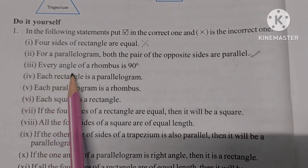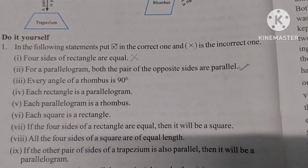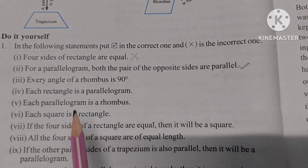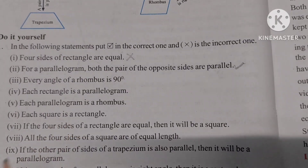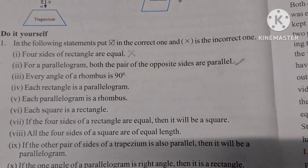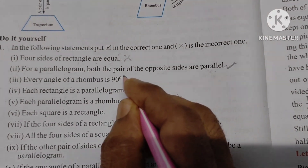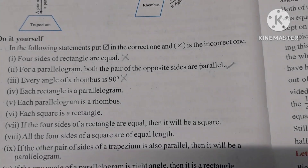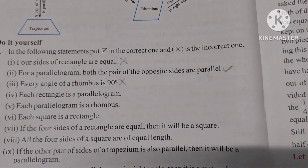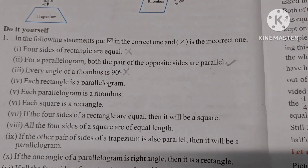Number 3: Every angle of a rhombus is 90 degrees. In a rhombus, the angles are not necessarily 90 degrees. Therefore, this statement is incorrect.